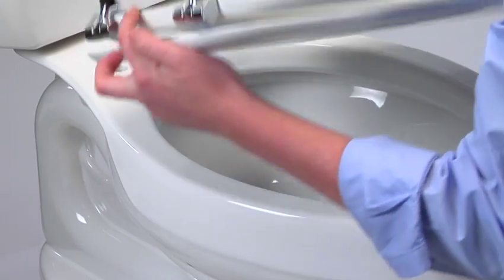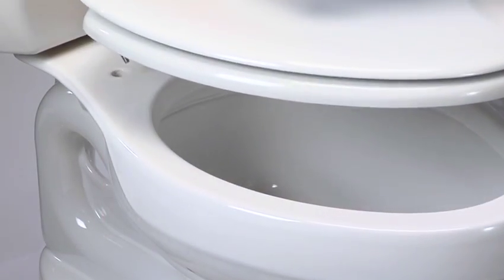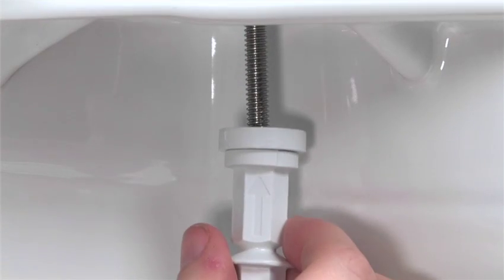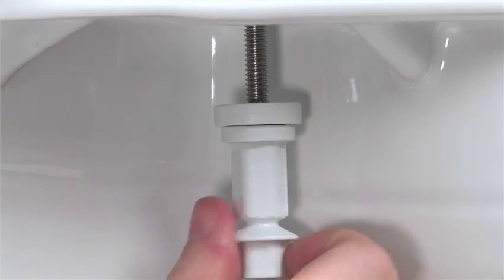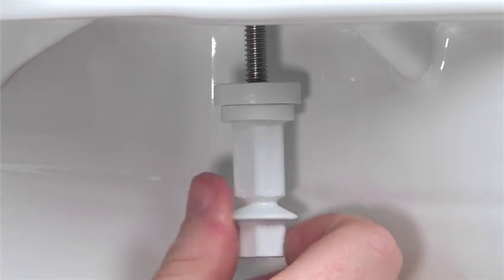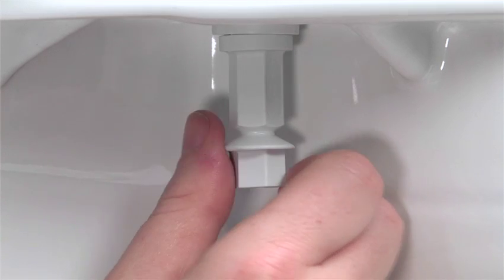Now, you're ready to place the seat on the toilet bowl. Reaching beneath the bowl, thread on the StayTight nuts. Make sure the arrow on the nut is pointing upward towards your bowl. Keep threading until both nuts are finger tight.